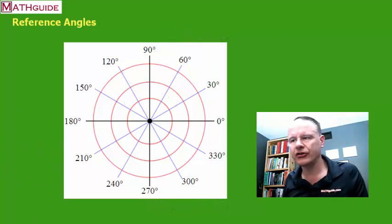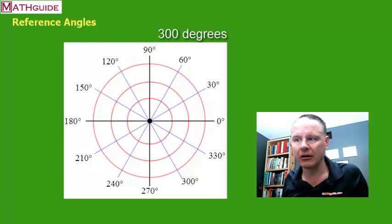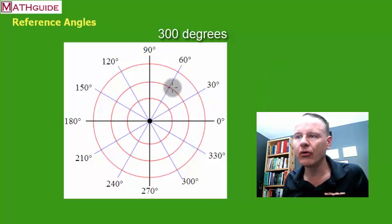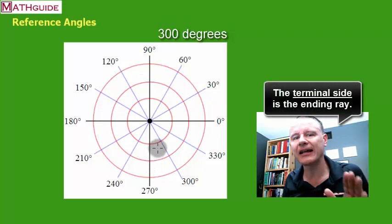So let's say that we wanted to graph a 300 degree angle. All right, I'm going to get a little technical now with some terminology. Well, the initial side of the angle or our starting point is always going to be at zero, always for standard trigonometric angles.